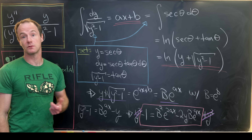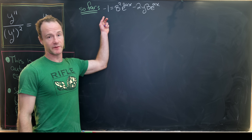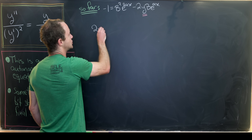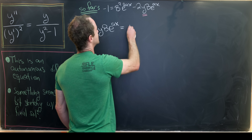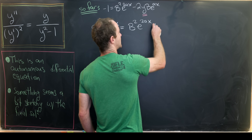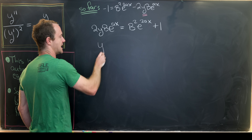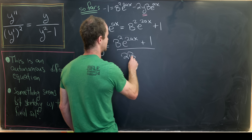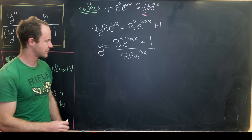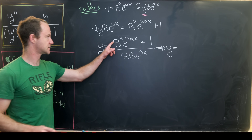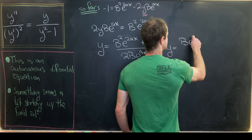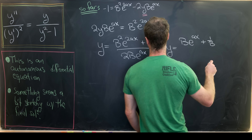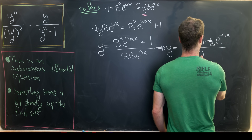Solving the linear equation for y: we get 2y times B times e to the ax equals B squared e to the 2ax plus 1. Dividing by 2 times B times e to the ax gives y equals B squared e to the 2ax plus 1, all over 2B e to the ax. Simplifying further: the B squared cancels with B to give B, and the exponents simplify, leaving y equals B e to the ax plus (1/B) e to the minus ax, all over 2.